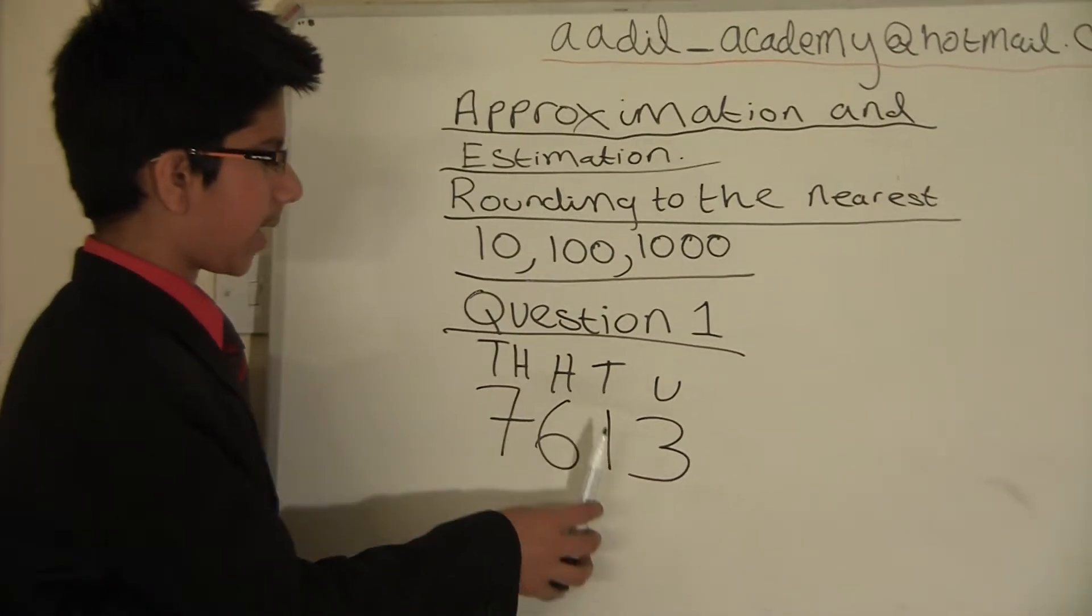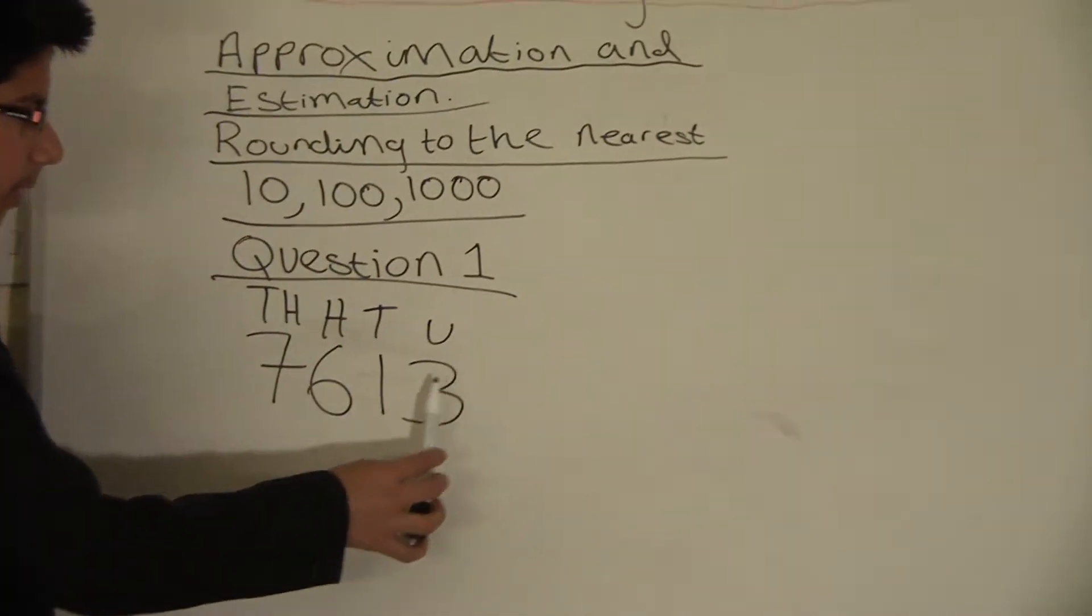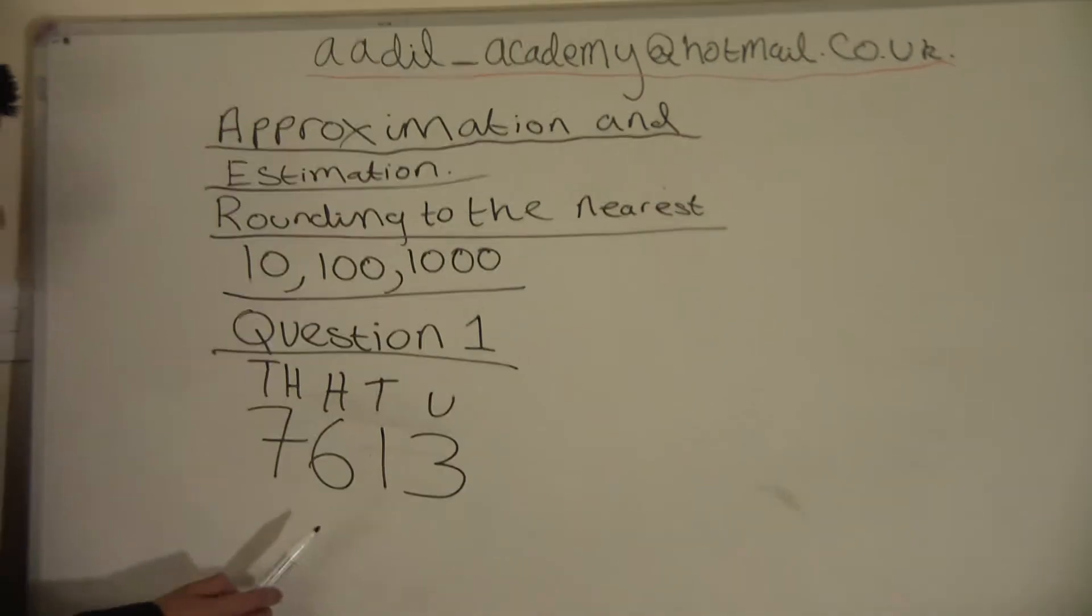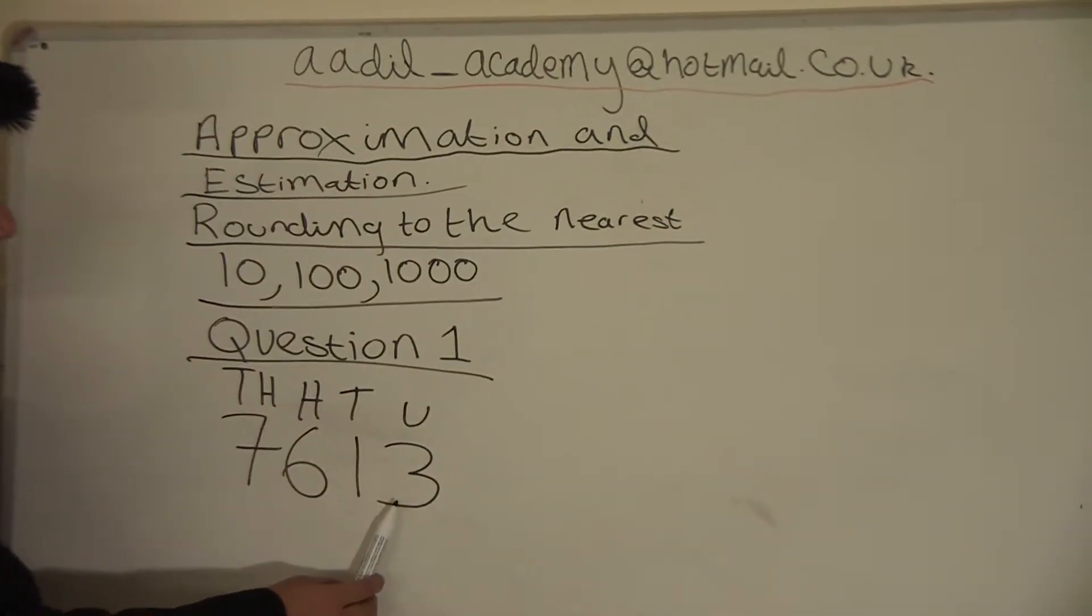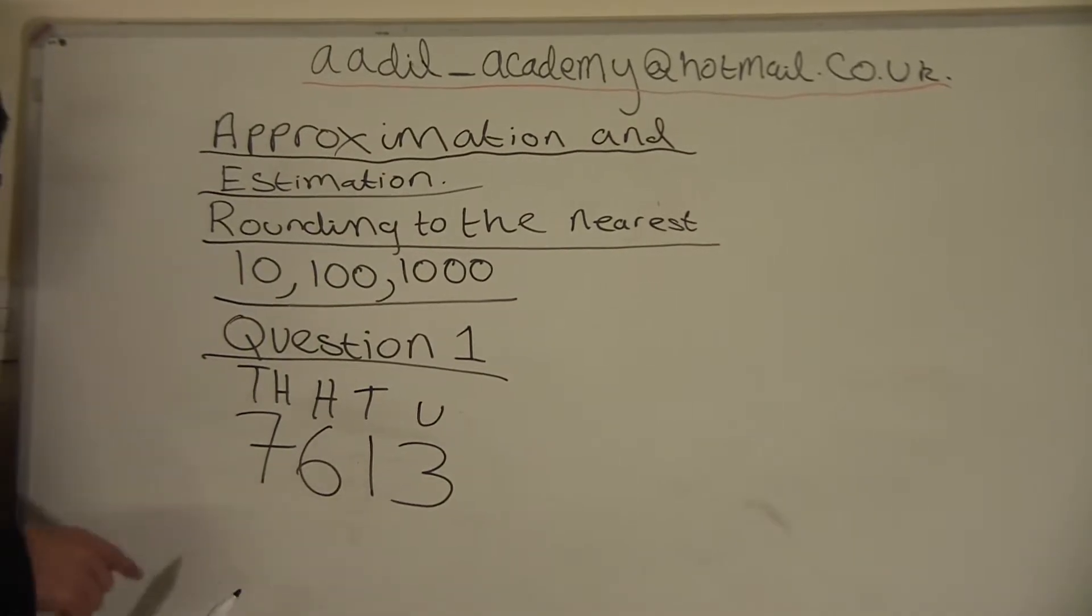To round this to the nearest ten, we will have to look at the units column. Like you can see here, u. If the number in the units column is below five, we round down.